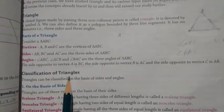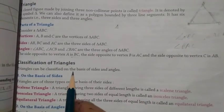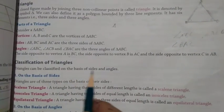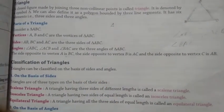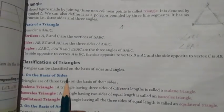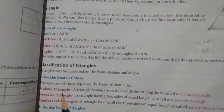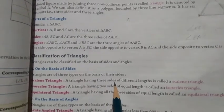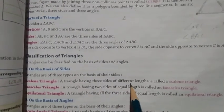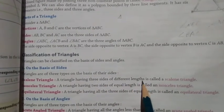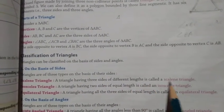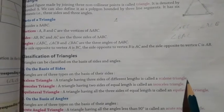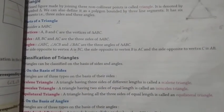Classification of triangles: Triangles can be classified on the basis of sides and angles. First we will look at sides. A scalene triangle is a triangle having three sides of different lengths.